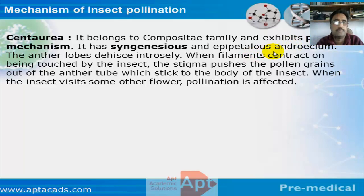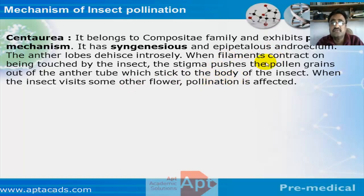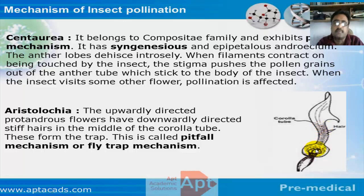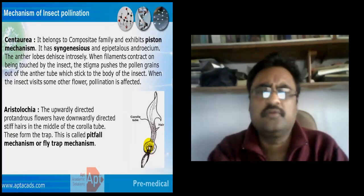The next is the piston mechanism, a typical feature of the family Compositae, known for syngenesis and epipetalous androecium where filaments are free and anthers are fused. When an insect touches the stigma, it pushes the pollen grains out of the anther tube, which stick to the insect's body. In Aristolochia, there is a pitfall mechanism — hair-like structures prevent the insect from escaping once it enters, and when it reaches the lower end, pollination is effected. This is also known as the fly-trap mechanism.